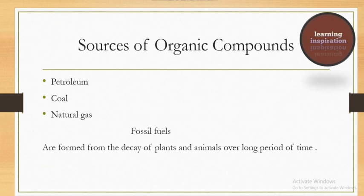Students, aaj hum read karayenge ke sources of organic compounds kya hain. Aap ki kitab ki anndar jo sources daye gaye hain - petroleum, coal, natural gas. Inke baare me aaj further hum study karayenge. Petroleum, coal and natural gas - yeh fossil fuels hain.